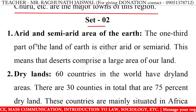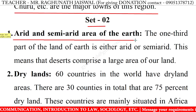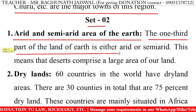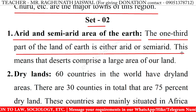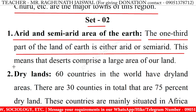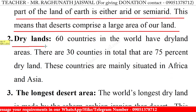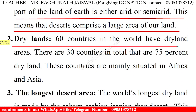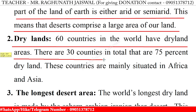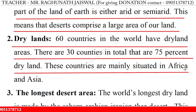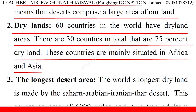Set 2. 1. Arid and semi-arid area of the earth: One-third part of the land of the earth is either arid or semi-arid. This means that deserts comprise a large area of our land. 2. Dry lands: Sixty countries in the world have dry land areas. There are 30 countries in total that are 75% dry land. These countries are mainly situated in Africa and Asia.